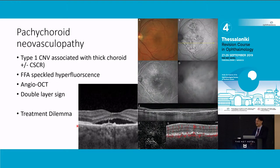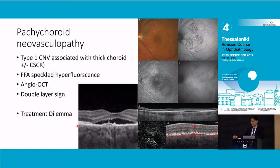Do you treat it as a CNV or do you not treat it? One of the most useful things that helps me decide is whether they've had a sudden change in vision, or what their visual acuity is. So if they are 6/6, 6/9, and they've been like that, and nothing's changed for three to six months and the fluid's going down, I'm not going to do anything, even if they have that finding.